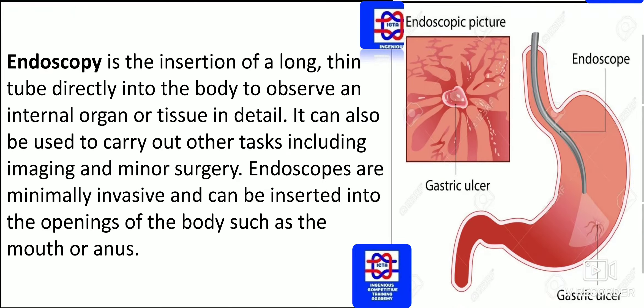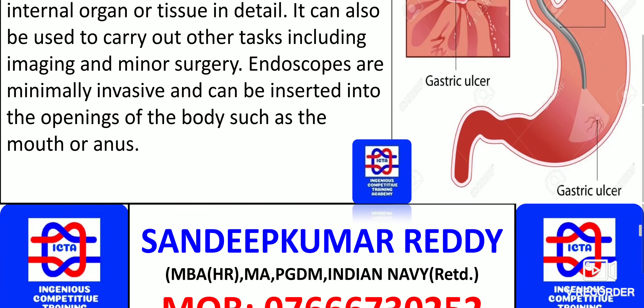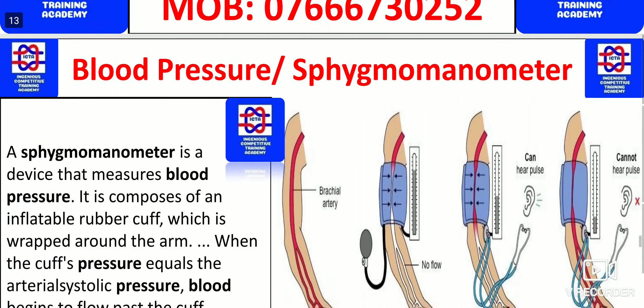Endoscopy — it is the insertion of a long, thin tube directly into the body to observe an internal organ or tissue in detail. It can also be used to carry out other tasks including imaging and minor surgery. Endoscopes are minimally invasive and can be inserted into openings of the body such as the mouth or anus to find out any kind of abnormality. As you can see to the right, a gastric ulcer can also be identified using endoscopy.